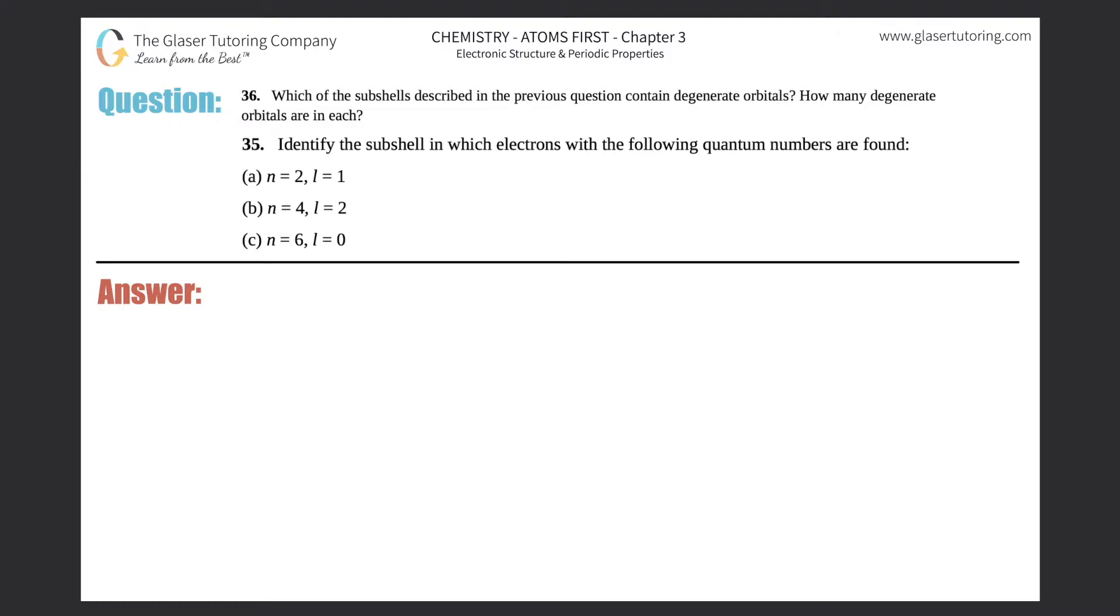Number 36. Which of the subshells described in the previous question contain degenerate orbitals? And how many degenerate orbitals are in each? So here is number 35 that we just did. If you need a full explanation on how to do 35, go to the last question.